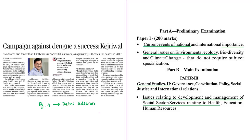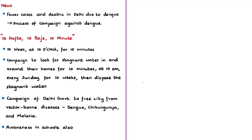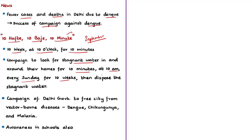This news article is about Dengue. Delhi has seen fewer cases and no deaths due to Dengue, and the Chief Minister of Delhi noted that this was due to the success of the campaign against Dengue. The campaign is named '10 Hafte, 10 Bajay, 10 Minute,' which literally means 10 weeks at 10 o'clock for 10 minutes. The campaign required people to check for stagnant water in and around their homes for 10 minutes at 10 a.m. every Sunday for 10 weeks. This campaign was started 10 weeks back in the month of September.